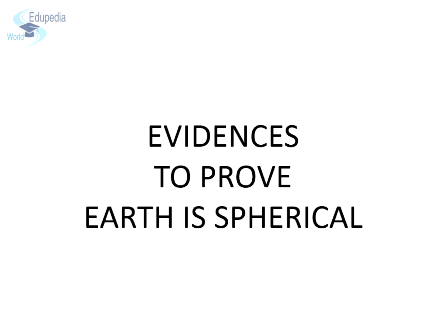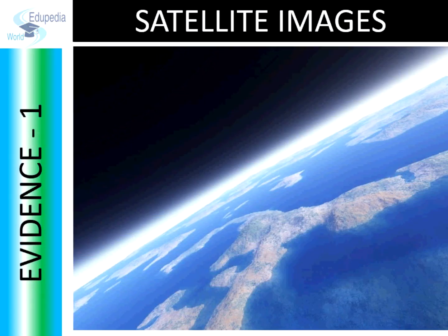The simplest and the most convincing proof that the Earth is round is to examine a photo of our planet taken from space or by orbiting it in a space shuttle. There can be no doubt from such evidence that the Earth is round, or more correctly, a sphere.